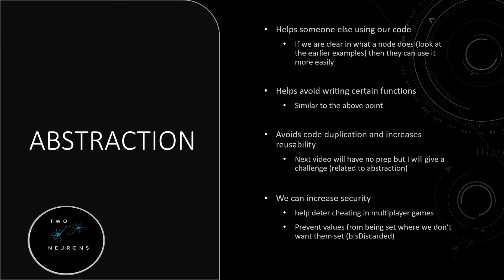It avoids duplication and increases reusability. When doing pure C++, for example, you don't need to write how a computer understands a keyboard — we already have a function and a header that does that. It's abstracted. We don't need to know the finer details, but we know it recognizes input and parses it into something we can use. It also helps avoid the duplication of code — think checking stamina or checking if a slot on an inventory system is available. Hint, hint — next video there will be challenges related to abstraction, and that's one of them.